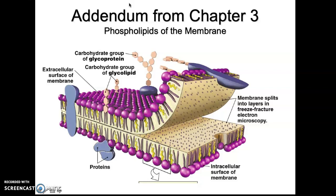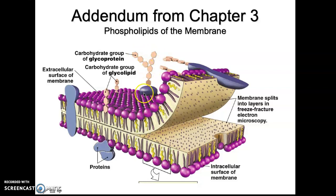In covering this chapter, I need to refer back to Chapter 3. Chapter 3 has more of the basics of the membrane itself. Here we're looking, with the purple balls, at phospholipids — the phospholipid head and the phospholipid tails. This is sliced down the middle so you can see the lower section going towards the inside of the cell and the outer section going towards the outside. There are also some glycolipids inserted here, and glycoproteins — long carbohydrate chains inserted onto proteins that transverse the membrane.